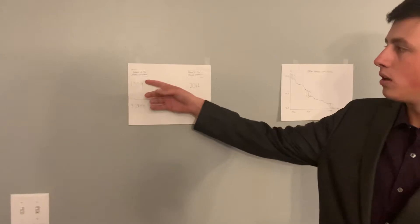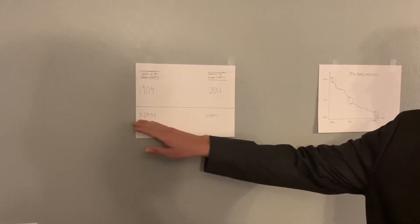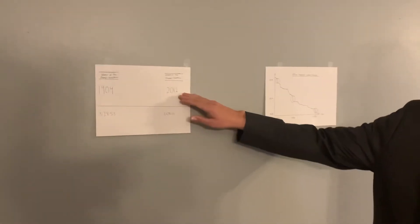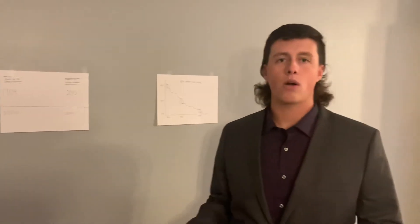In 1904, the winner of the Olympic Marathon ran it in three hours and 28 minutes. In 2012, the winner ran it in two hours and eight minutes. That's almost an hour and a half difference.